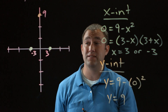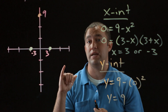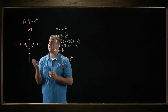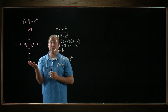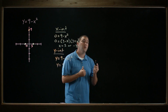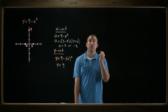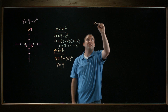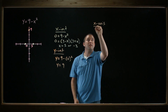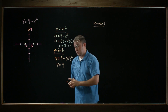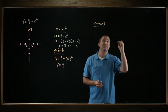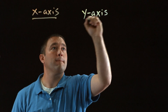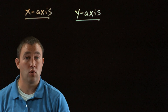So whatever this graph looks like, it hits the y-axis at 9 and it hits the x-axis at two places, at negative 3 and at 3. Another thing I can do to get an idea of what this looks like is check for symmetry. There are three types of symmetry generally looked at: symmetry about the x-axis, symmetry about the y-axis, and symmetry about the origin.